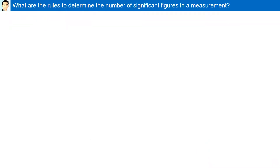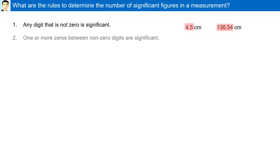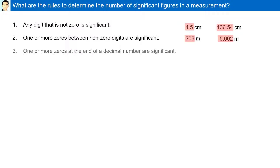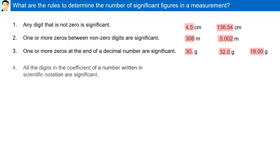What are the rules to determine the number of significant figures in a measurement? Any digit that is not a zero is significant. One or more zeros between non-zero digits are significant. One or more zeros at the end of a decimal number are significant. All the digits in the coefficient of a number written in scientific notation are significant.